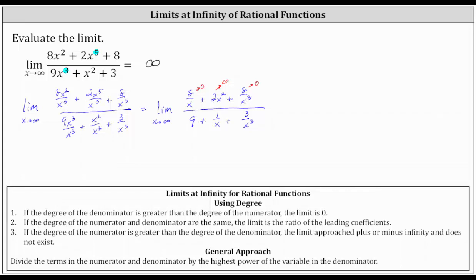In the denominator, 9 is not affected by x. 1 divided by x approaches 0 as x approaches infinity, and 3 divided by x cubed approaches 0 as x approaches infinity.